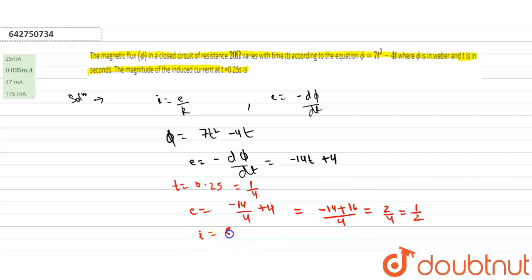Now i equals e by r. E is 0.5 and r is given as 20.